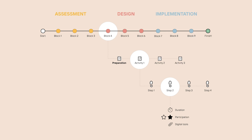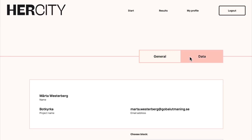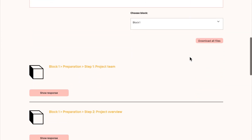As a guidance, the majority of the toolbox is intended for the project team. When girls and stakeholders are participating, the activity is marked with a white star, and when they are the main users of a tool, it's marked with a black star. You can access your data at any time by clicking on results.